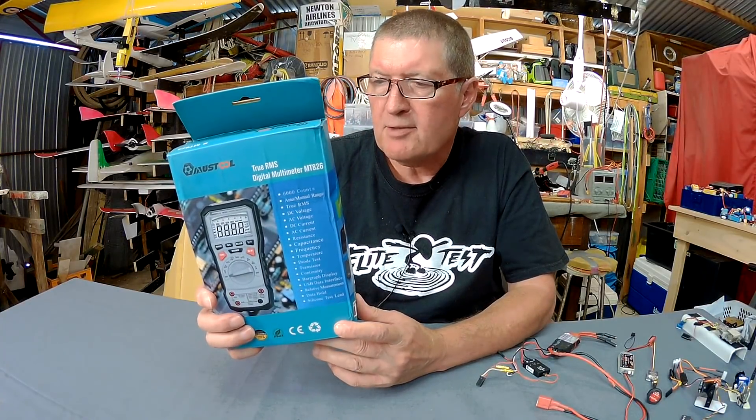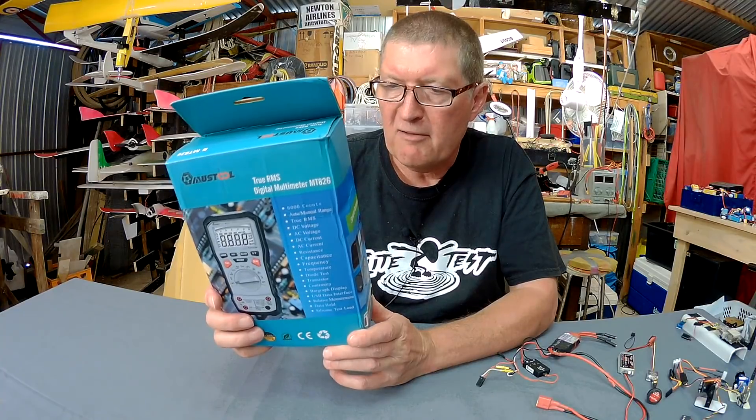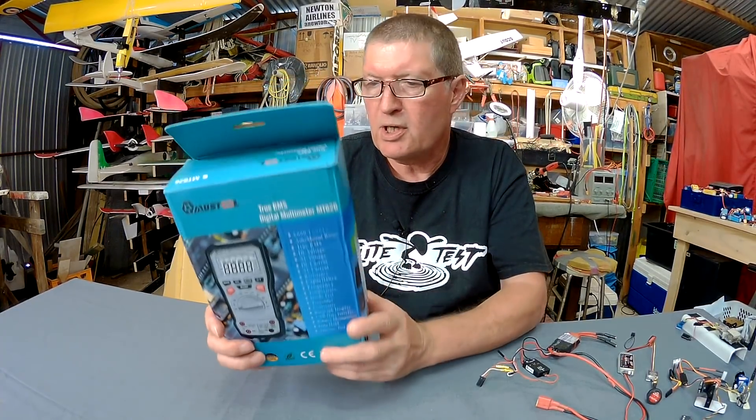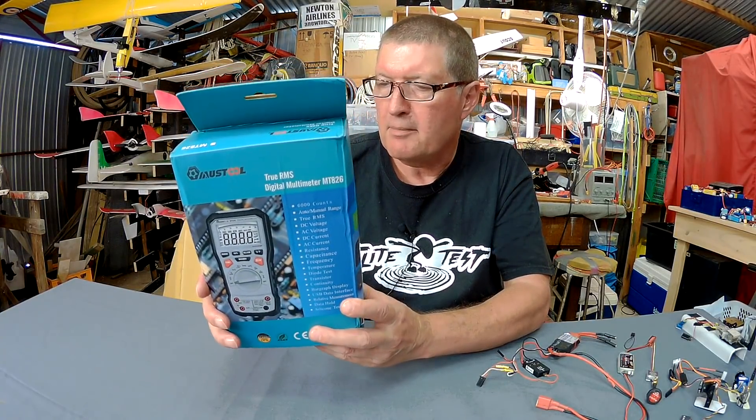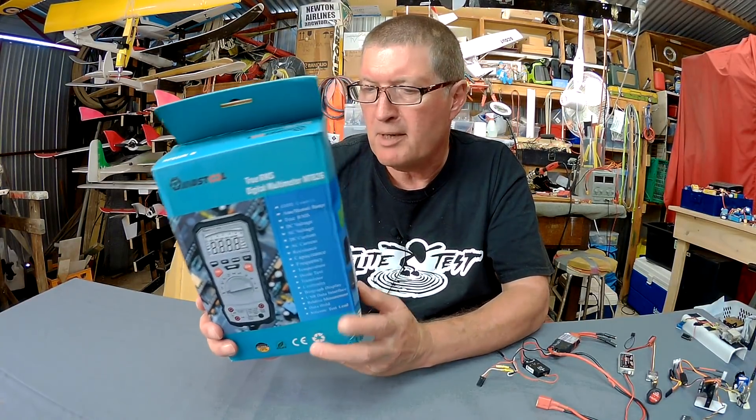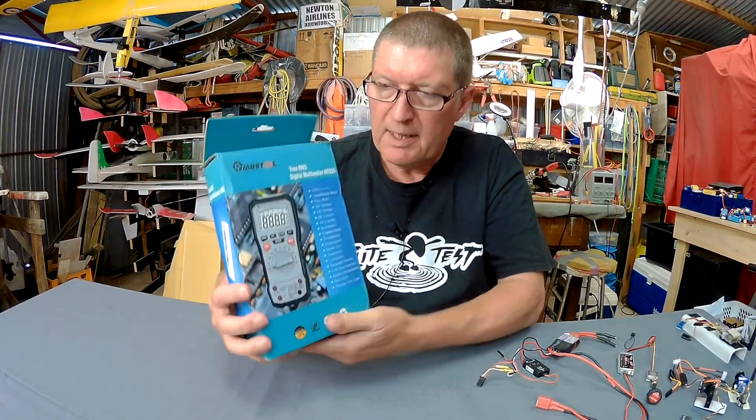It has a USB interface, which means you can connect it to your PC for some sort of live readings on PC, I think. Auto and manual range switching. It can measure temperature. It has a backlight and date. It can measure maximum and minimum and the difference between maximum and minimum measurements and it comes with a nice carry case as well.